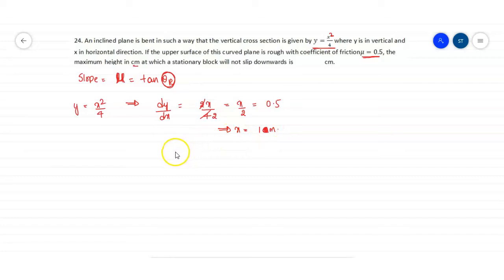Here we can say y equals x squared by 4. Just substitute the value of x here. This will be 1 squared upon 4, that will be 0.25 meters. We want the solution in centimeters. 0.25 meter will be 25 centimeters.